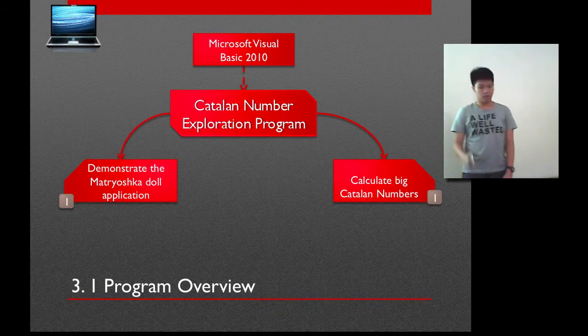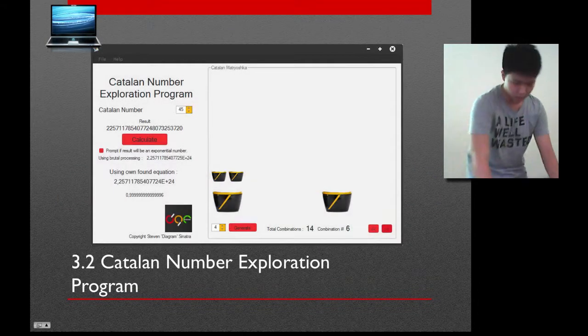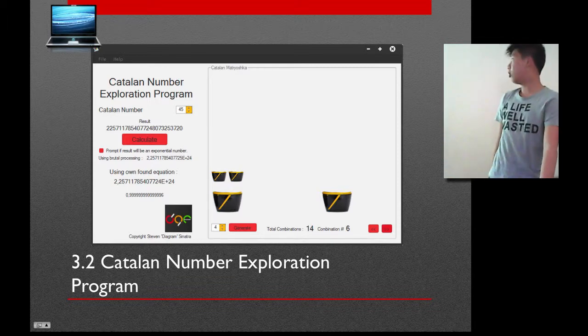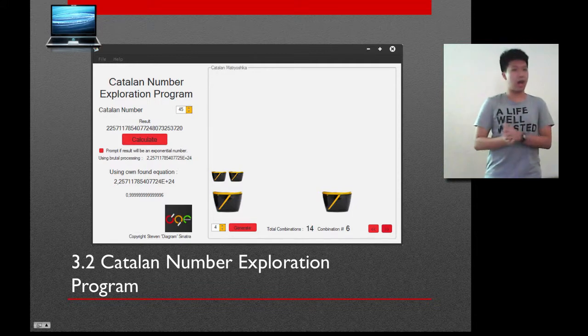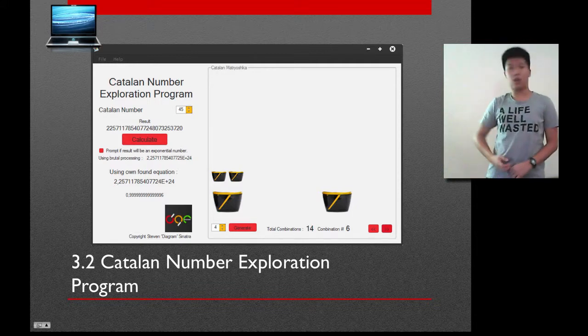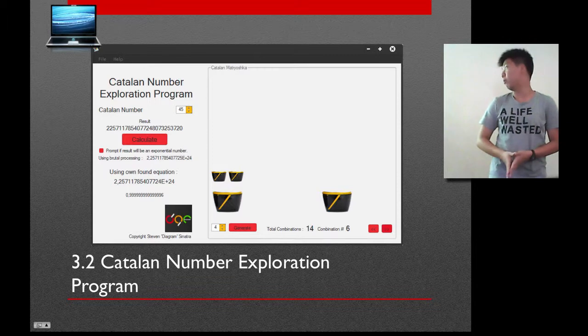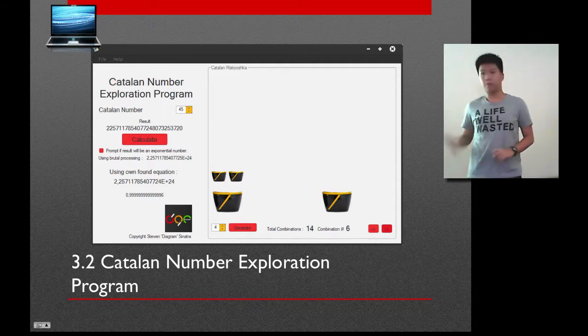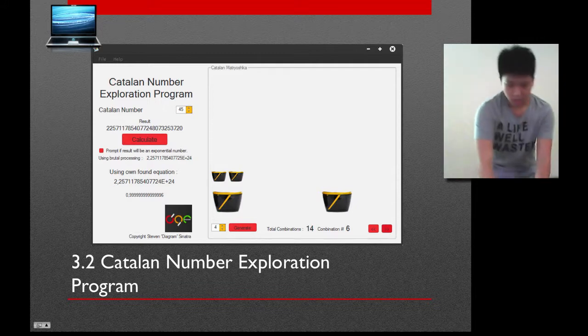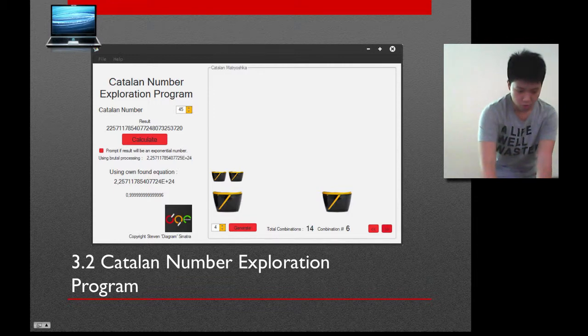So here is the program. I actually have one ready to show you here. And here is the program. As you can see here, the Catalan number exploration program could calculate until the 134th Catalan number. And it could show you that the application that I have shown you really works, but only for $5 maximum. I couldn't get more of that. So I am going to do this as my future work.